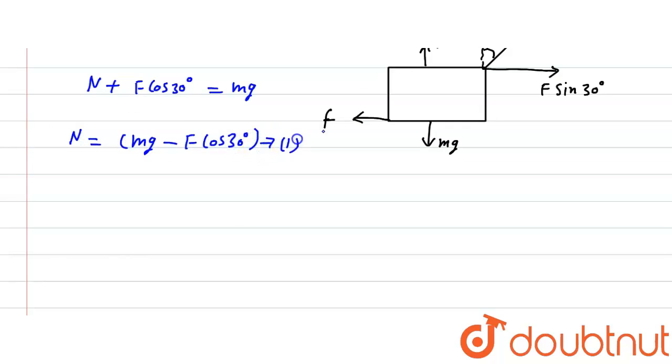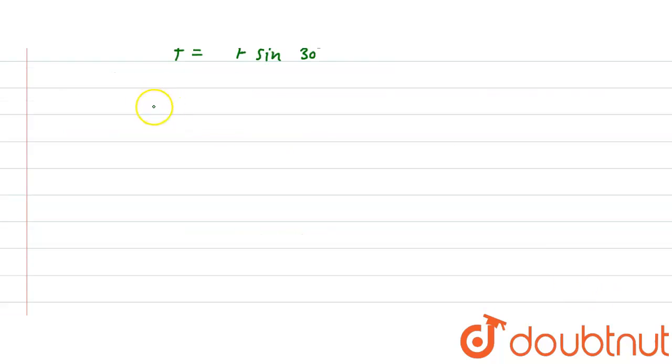Now here in case of horizontal, we can write - means just block slide - so here this is equal to friction force. Friction force equals F sin 30 degrees, and friction force equals μN = F sin 30. Now here put the value of N, so here N we find mg minus F cos 30 degrees, and here this is equal to F sin 30 degrees.